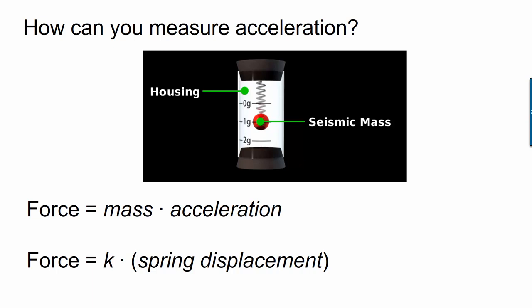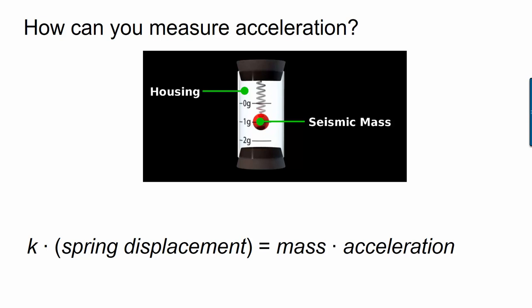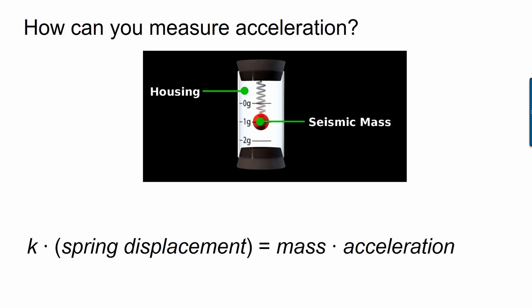I know that that same force is also causing the spring displacement. If I could measure what is that spring displacement, how far did the spring stretch, and I know what K is, then the only thing that I don't know is acceleration, and I can solve for it. Algebraically, you can set those two forces equal to each other and then divide by mass to give you acceleration. So if you're trying to calculate acceleration, you can do so if you know your spring constant, you know the size of your mass, and you're able to measure the spring displacement.